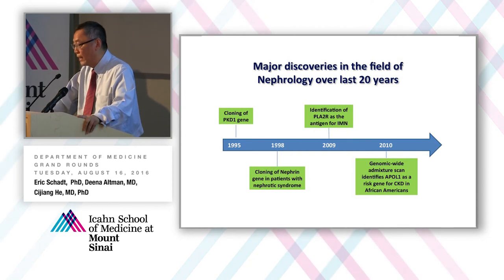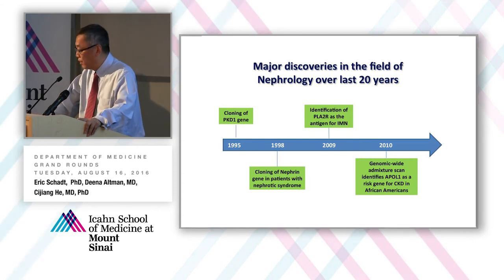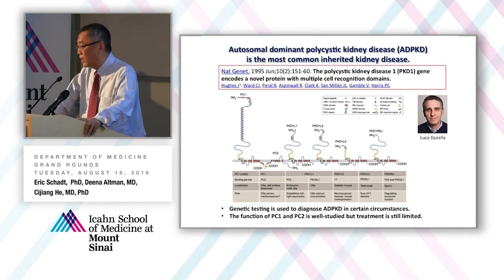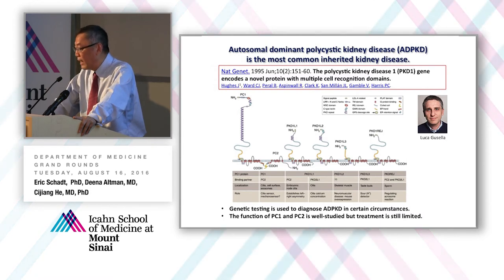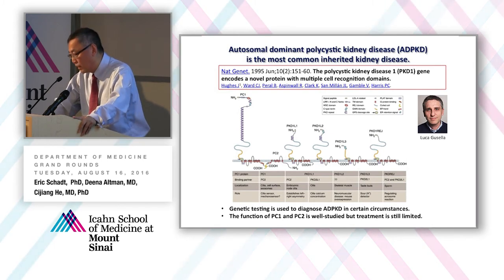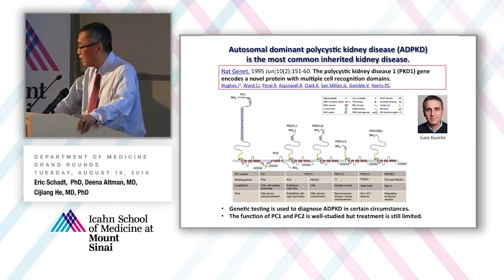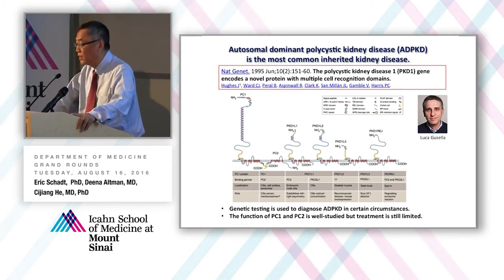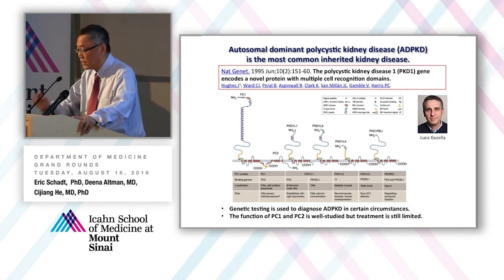The PKD gene has huge impact in the field — we can now use genetic testing to diagnose PKD patients in certain situations. Since then, many PKD-related genes have been identified, and the function of PKD genes including PC1 and PC2 is being well-studied. However, treatment is still limited. Regarding the nephrin gene discovery — we understand that nephrin is a key molecule to make the slit diaphragm between the podocyte and foot process. Many other genes have been discovered, all responsible for development and progression of kidney disease such as focal segmental glomerulosclerosis. Mount Sinai has one of the best teams in the country to study podocyte biology.